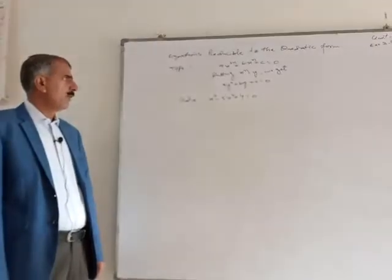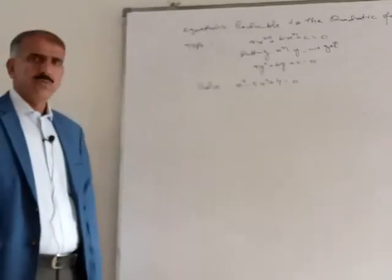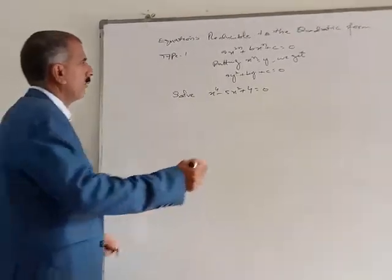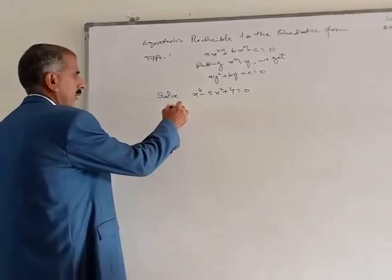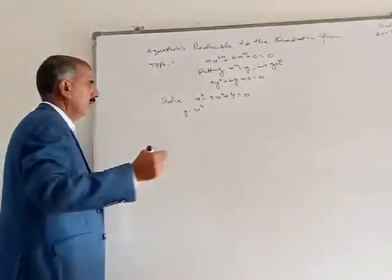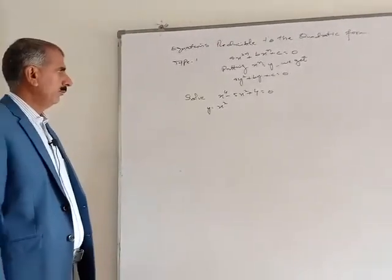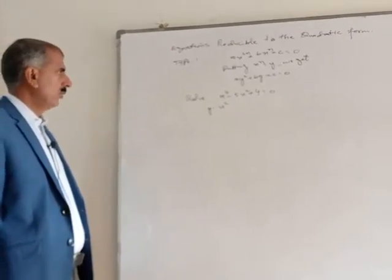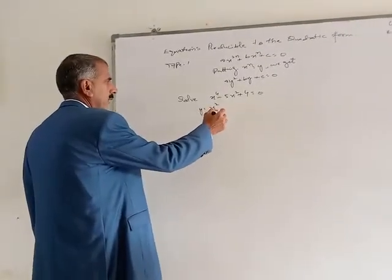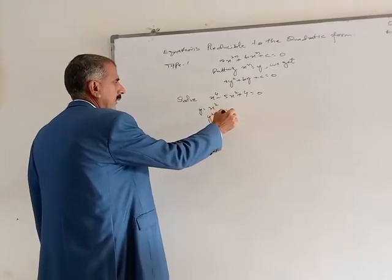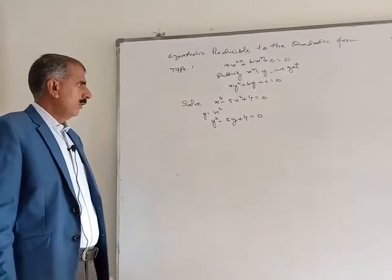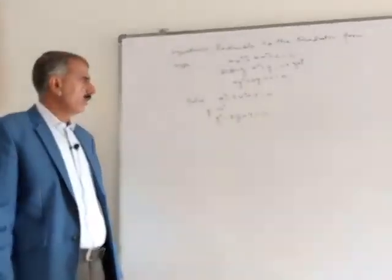We have the example: x to the power 4 minus 5 x squared plus 4 is equal to 0. Here we put y equal to x squared. Substituting, we get y squared minus 5y plus 4 is equal to 0.